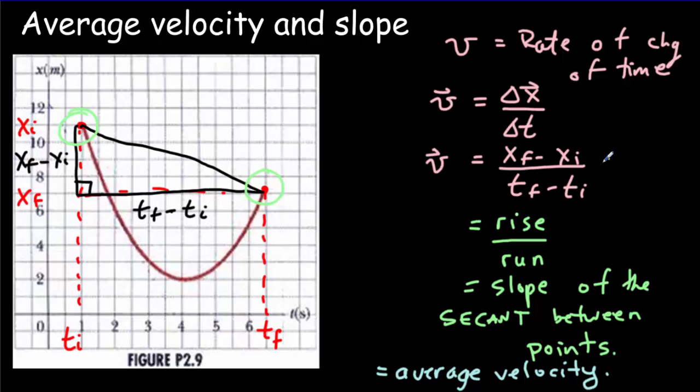So if we maybe plug in some numbers here, our rise would be 7 minus 11, and our run would be 6.5 minus 1 or 5.5. And you get an answer there of negative 0.72 units would be meters per second. What that means is that a person, starting at this initial point, moving at a constant velocity of negative 0.72 meters per second the whole time, would end up at exactly the same final position. So that's an average velocity.